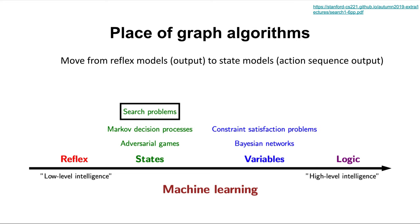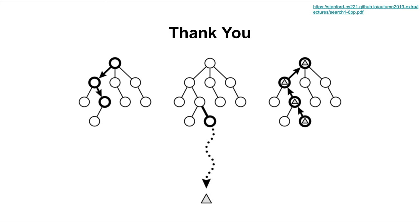If today's video felt a little out of place, I want to explain how it's really important when thinking about how machine learning will advance in coming years — moving from reflex models and output-based models to state and action-based models. That will do it for today's video. Thank you for watching. Make sure to drop a like and subscribe. The next video will be the last in the machine learning series, and then we'll have 10 videos on deep learning. Make sure to do more research into this topic — there's a lot to learn here. I'll see you guys next time.